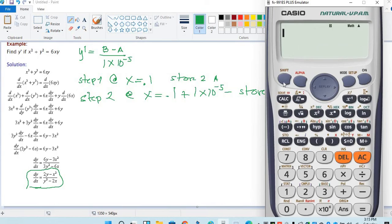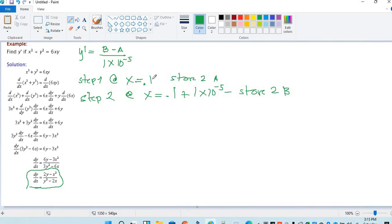From the formula y prime, b minus a over 1 times 10 raised to negative 5, equal. The result is 0.033, shape, store C. The answer is 0.033, something I restored, store it to C.